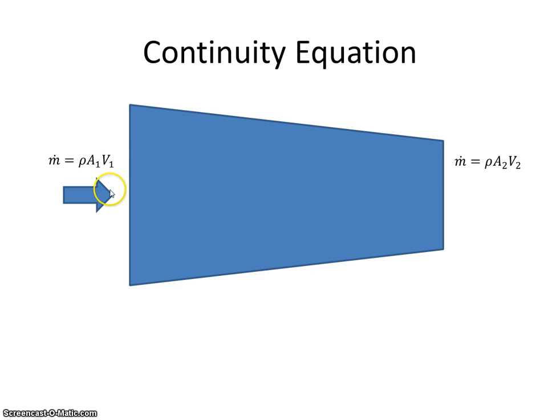So if that remains constant, then this air, if the cross-sectional area reduces down here, then the velocity must increase.